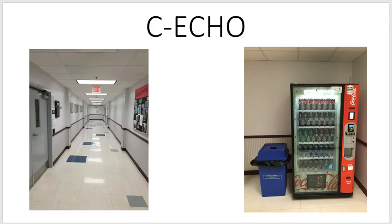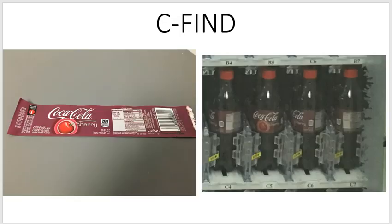C-ECHO has no object — C-ECHO just helps us know if things are available on our network. Let's say I wanted to know if the coke machine down the hall was still there. I could walk down the hallway, go around the corner, and see that the coke machine is still there. That would essentially be a C-ECHO — I'm just finding out where things are at.